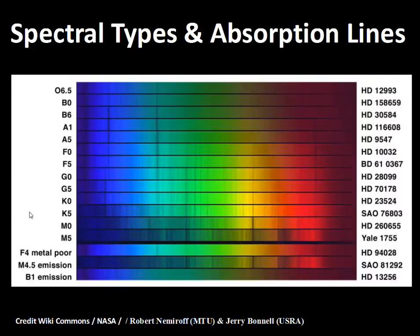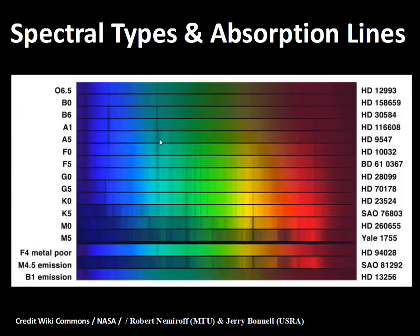Let's take a look at the spectral types. In the 1800s, when people started to apply photography to astronomy and apply prisms and diffraction gratings to spread out the light, they recorded photographic spectra of the stars and started to classify them. If you look where my pointer is, you'll see a line that gets darker as we go from the O into the A region, and then that line gets less noticeable as we go to the G's.